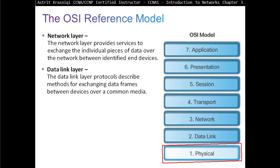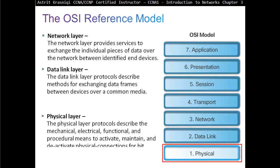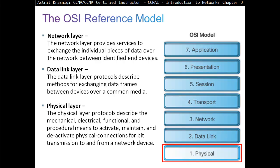Layer 1 is the physical layer. The physical layer deals with actually moving the 0s and 1s — the physical signals: electricity, waves, or light — from the source to the destination.